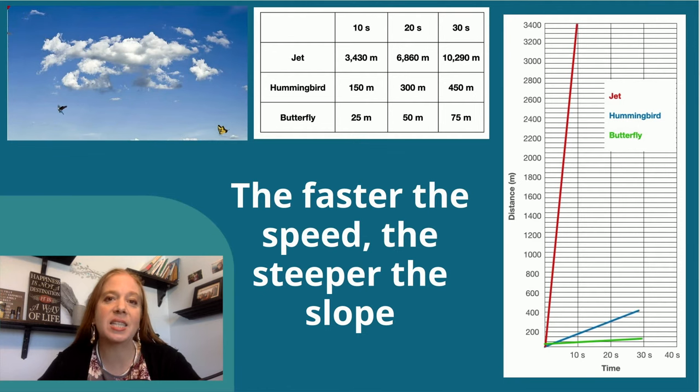Here we can see it's still a straight line because it's constant speed. But the faster the speed, the steeper the slope.